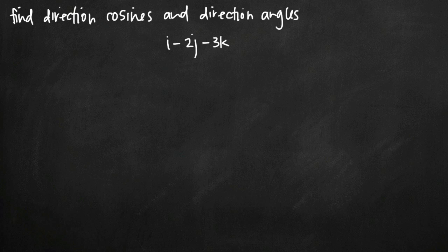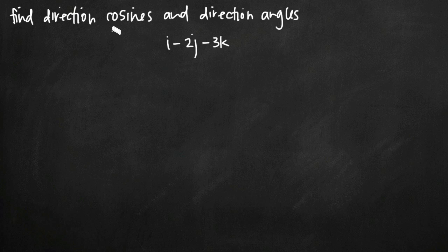Today we're going to be talking about how to find direction cosines and direction angles of a vector. In this particular problem we've been given the vector i minus 2j minus 3k. The first thing we want to do is find the direction numbers of the vector, and that's why we're going to be looking for direction cosines and direction angles.